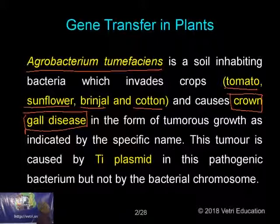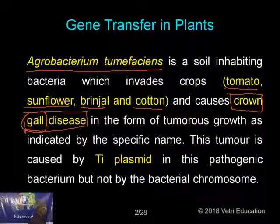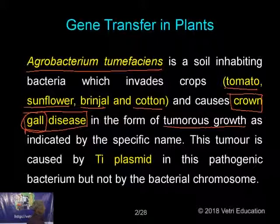Agrobacterium tumefaciens attacks Lycopersicum, Helianthus annuus, Solanum melongena, and Gossypium barbadense, causing the disease called crown gall disease. Galls are bubble-like structures, hard in nature, produced in the nodal portion or root — a tumorous growth, as indicated by the species name tumefaciens. This tumour is caused by the Ti plasmid — produced by the Ti plasmid in this pathogenic bacterium, not by the bacterial chromosome.